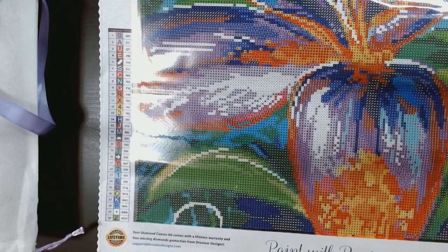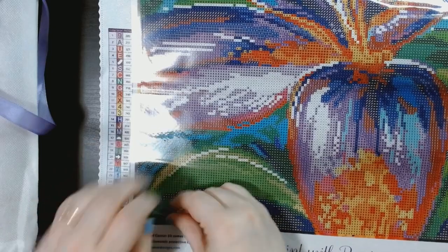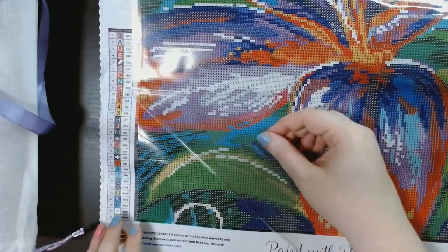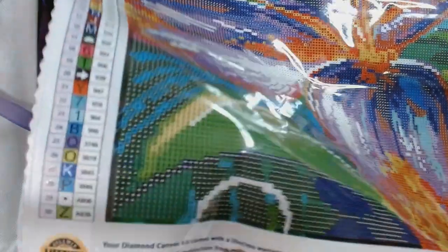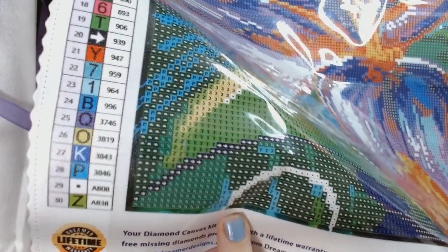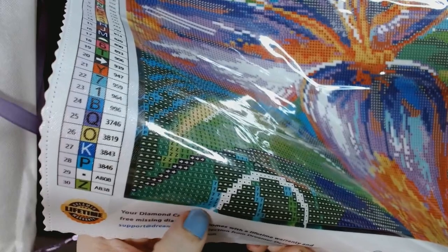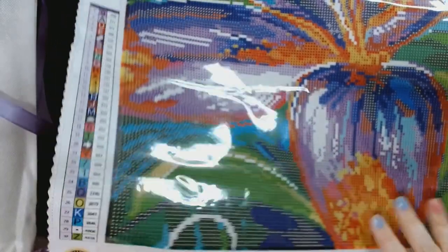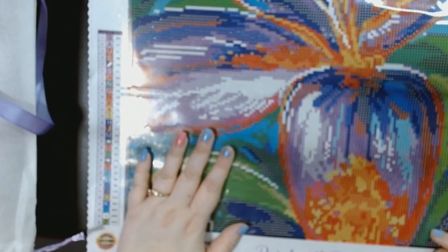Let's check the stickiness of the canvas. I'm sure it is fine. Look at that stickiness. So the one thing that Dreamer Designs does too, as you can see here, so they have where the drills end and then they have a little extra. So I like that. It has like this little border kind of going around the whole thing. Although I will be putting, like I always do, I'll put washi tape down.